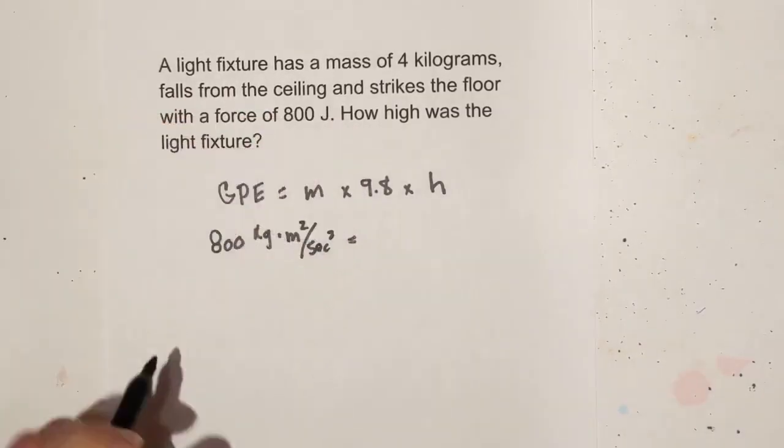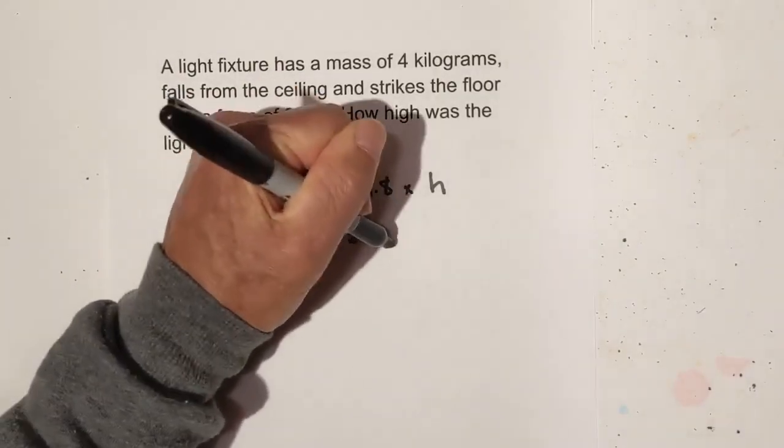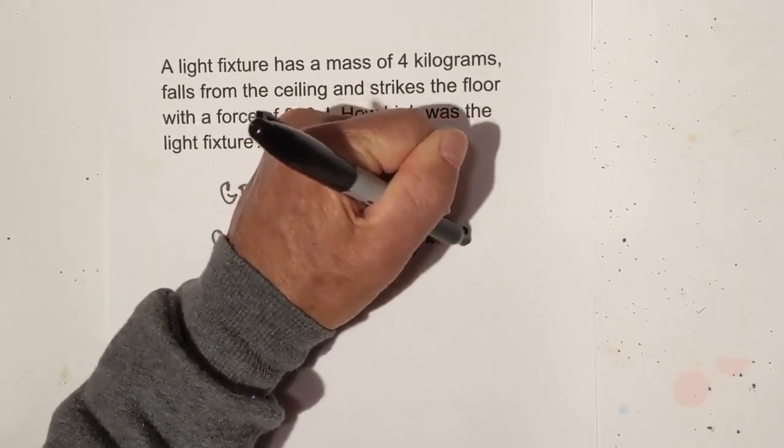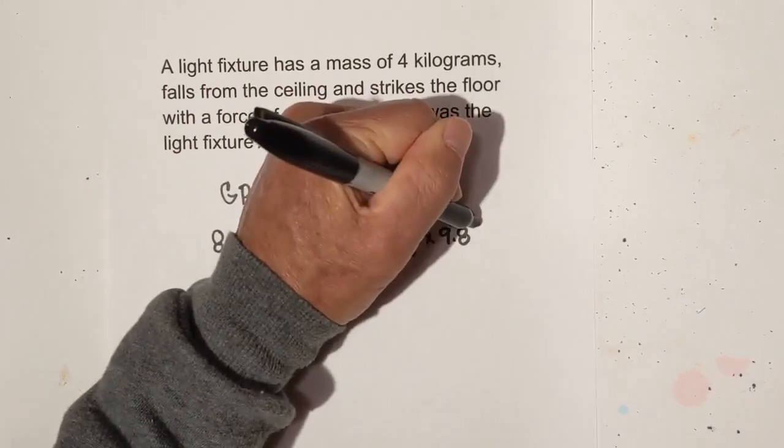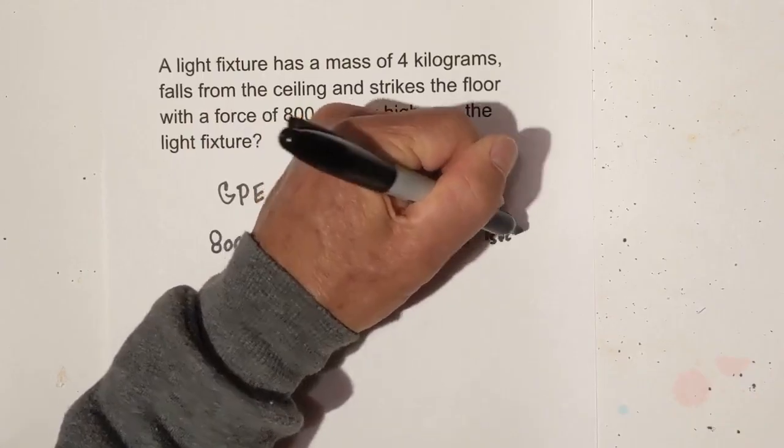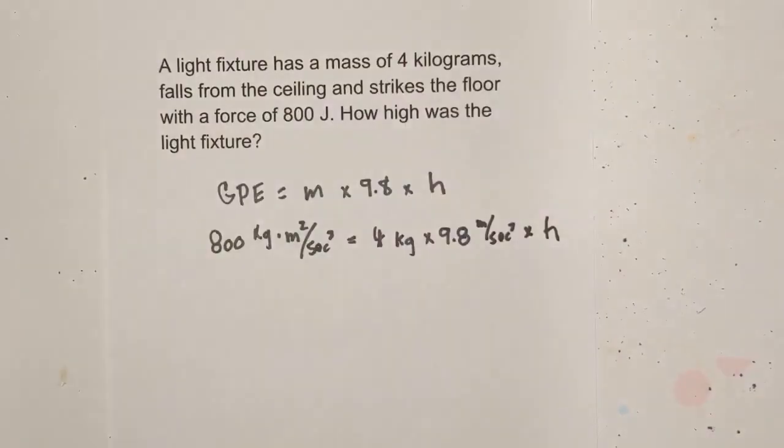Then we know the mass, which is 4 kilograms. And we know what the gravity constant is, 9.8, and that is meters per second squared times, and we're trying to find H.